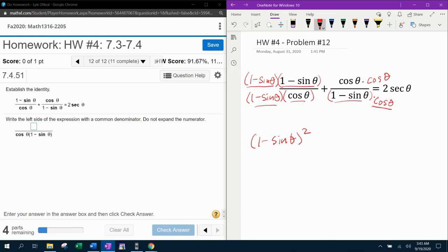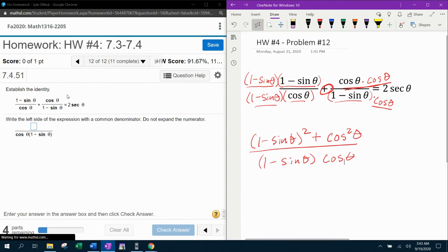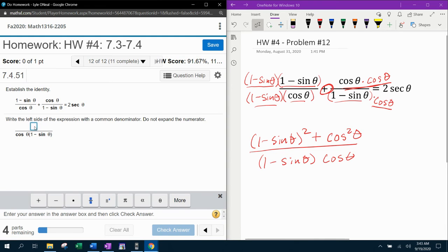One minus sine theta times itself would be one minus sine theta squared. And then I'm going to have my plus cosine theta times cosine theta, which is cosine squared theta. I think that's what they want for the numerator.